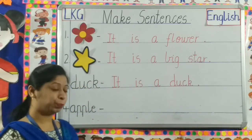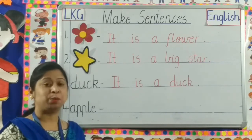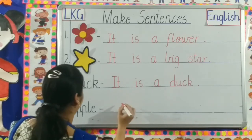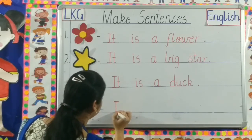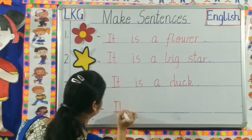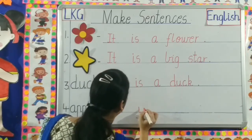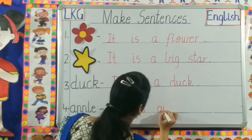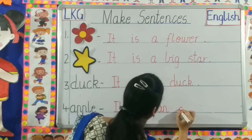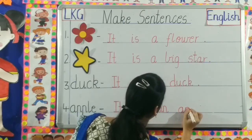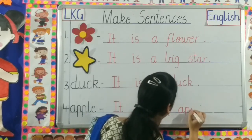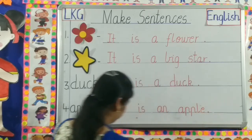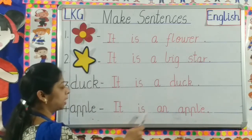Number four — apple. Can you make a sentence with the word apple? Yes, let us write the sentence. I-T, It. I-S, Is. A-N, An. A-P-P-L-E, Apple. Full stop. It is an apple.